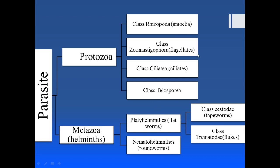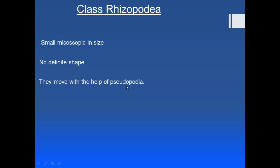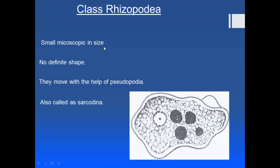Today we will be covering the class Rhizopoda or amoeba. The general features of class Rhizopoda are: first, they are very small and microscopic in size; second, they don't have any rigid shape — no pellicle or any rigid structure; third, they move with the help of pseudopodia, which is very prominent. On the basis of this pseudopodia they are classified into class Rhizopoda, also called Sarcodina. You can see in the image the cytoplasmic extension called pseudopodia or false feet.